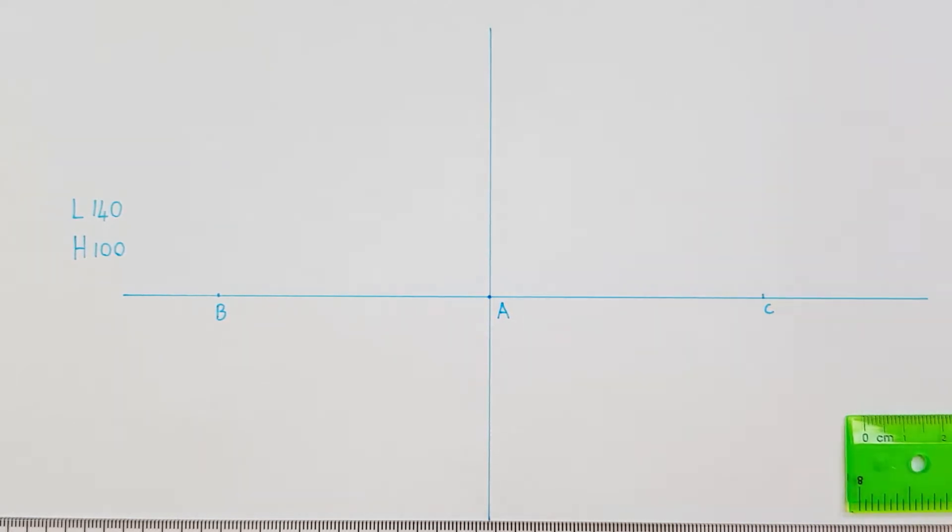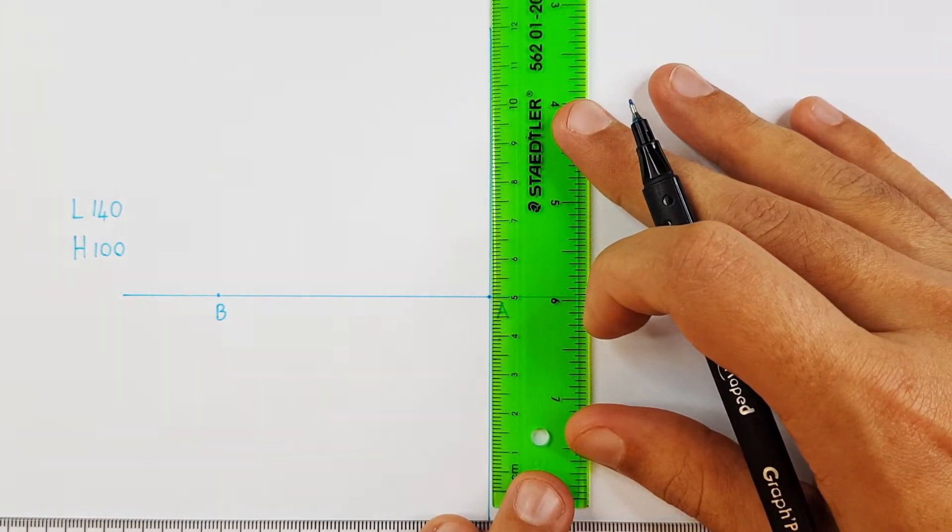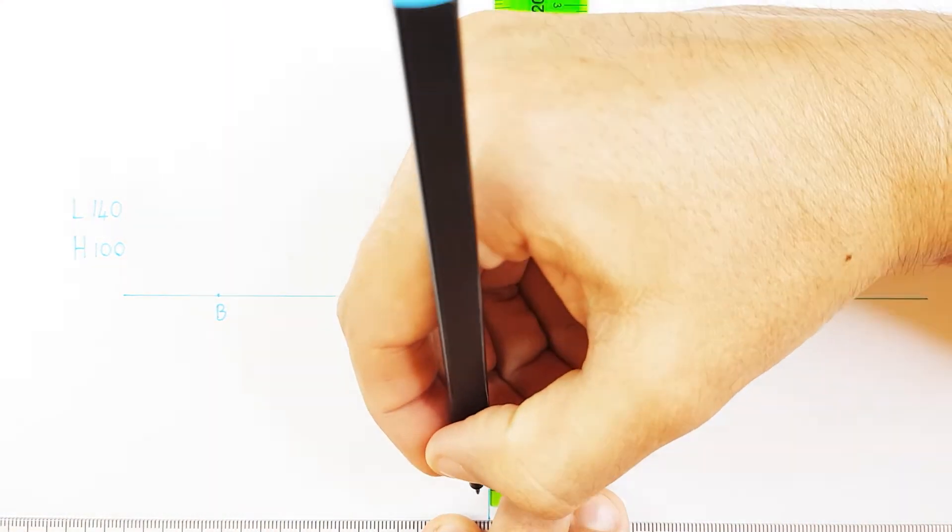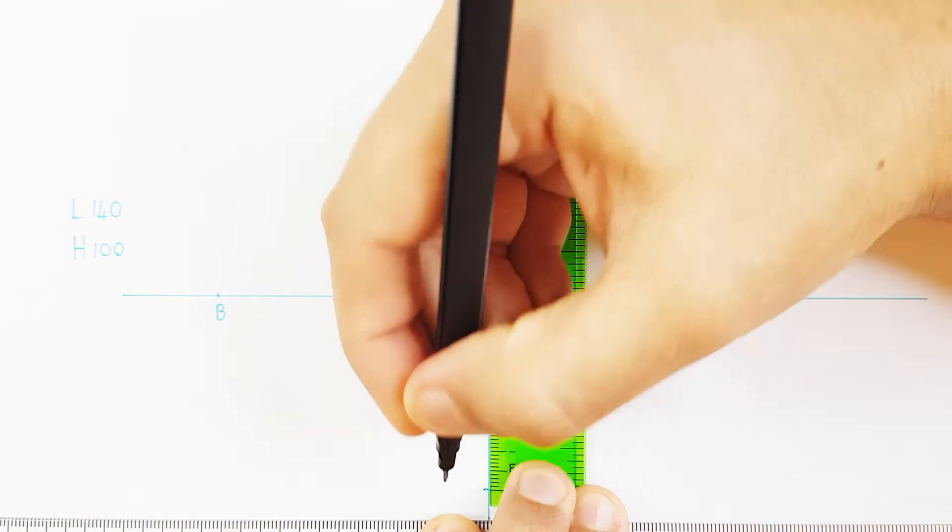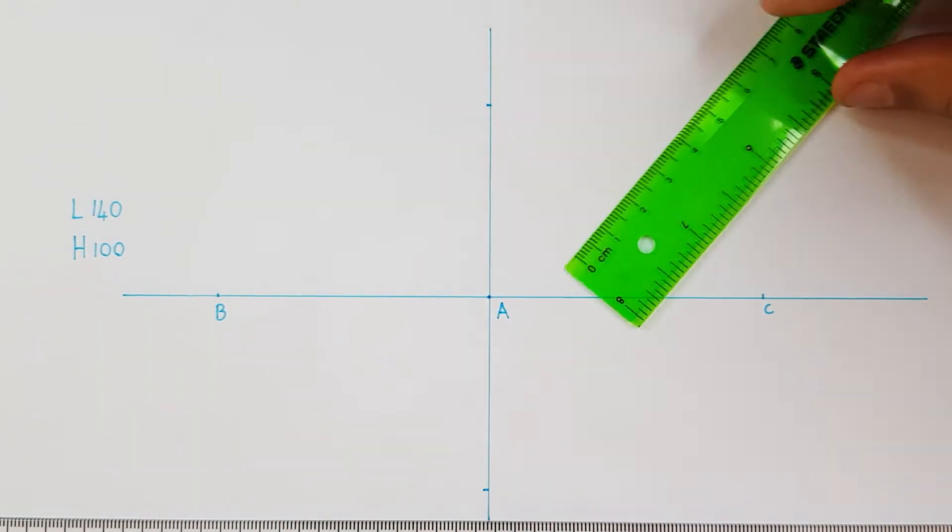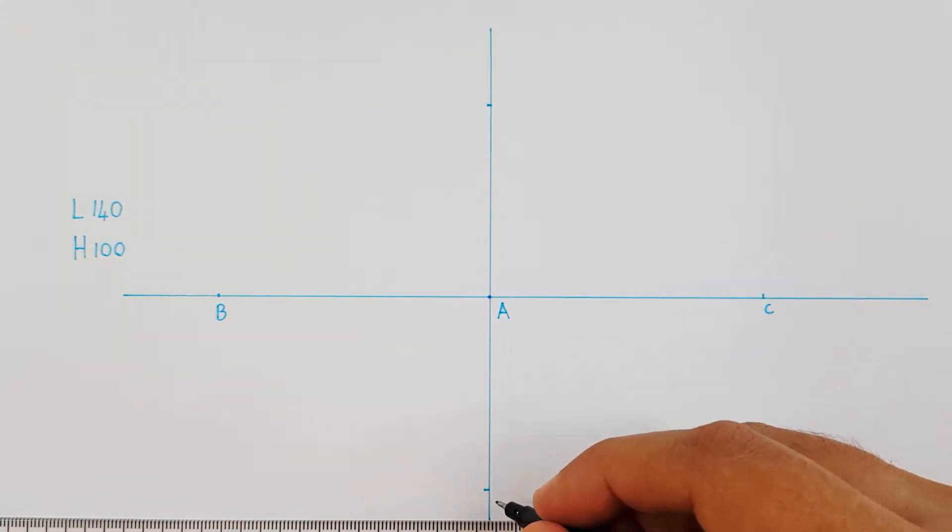For my minor axis I will use the total measurement of 100, which means that will be 50mm below and above point A. I can label those points as D and E.